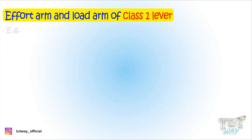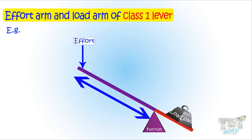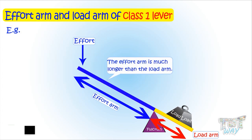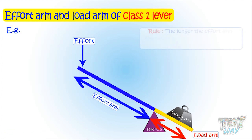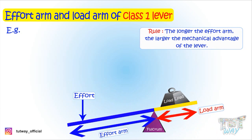Now let's learn it with examples. Here we have a class 1 lever. This point is effort, this is fulcrum, and this is the load. The effort arm is the distance between the effort and the fulcrum — so this much is the effort arm. The load arm is the distance between the load and the fulcrum — so this much is the load arm. You can clearly see that the effort arm is much longer than the load arm, so this lever will give a large mechanical advantage.